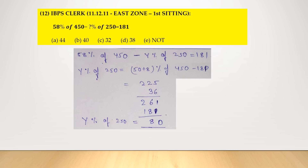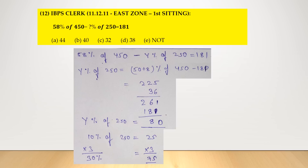So y% of 250 is equal to 80. Since 10% of 250 is 25, then 30% equals 75, and 1% of 250 is 2.5, so 2% equals 5. Therefore 75 plus 5 equals 80, which is the required result. So y = 30 + 2 = 32%. Option number C.